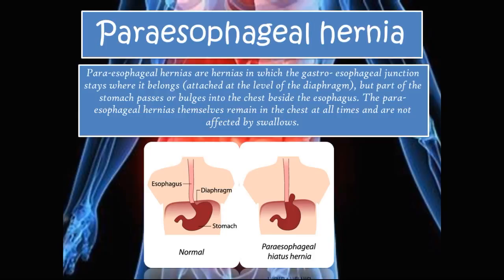In paraesophageal hernias, the gastroesophageal junction stays where it belongs, attached at the level of the diaphragm, but part of the stomach passes or bulges into the chest alongside the esophagus. The herniated portion remains in the chest at all times and is not affected by swallowing. Comparing to normal anatomy, the gastroesophageal junction remains in its correct position below the diaphragm.